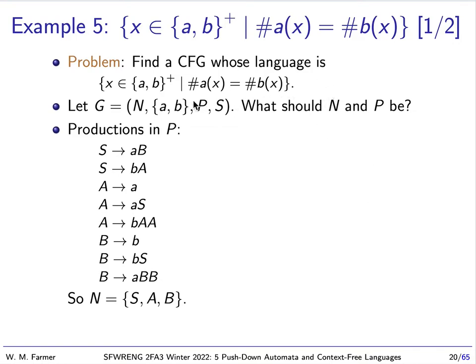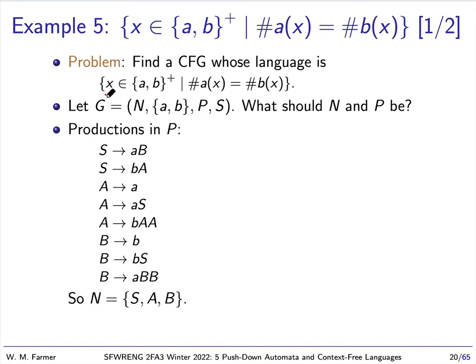The problem is to look at this language, which is the set of all non-empty strings of A and B such that the number of A's in the string equals the number of B's in the string. We would like to find a context-free grammar that generates this language, which will show that this language is context-free.